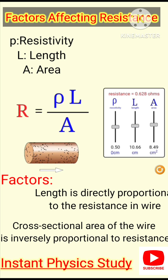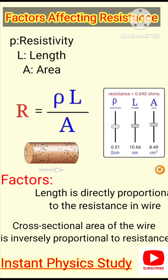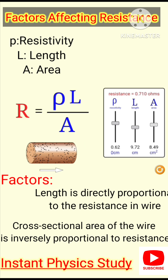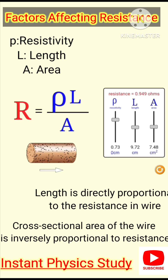The third factor is a constant called resistivity. If we increase or decrease the resistivity, it also affects the resistance. So the three factors on which resistance depends are: length, area, and resistivity, which is the constant of proportionality.